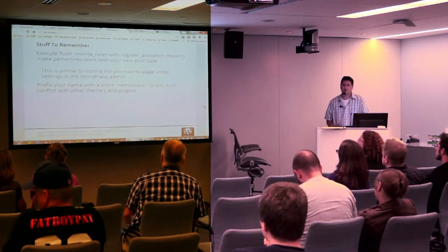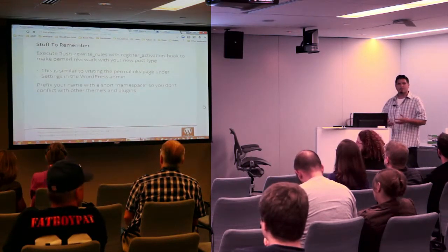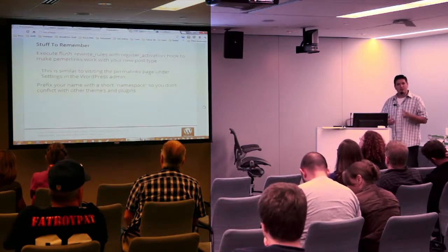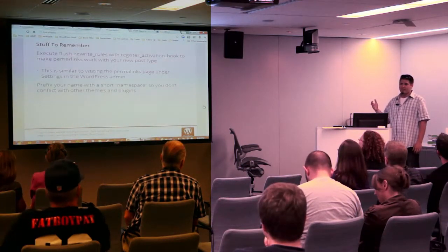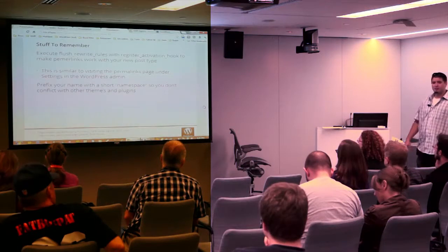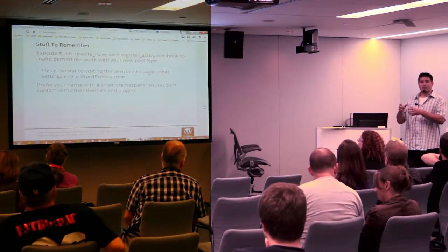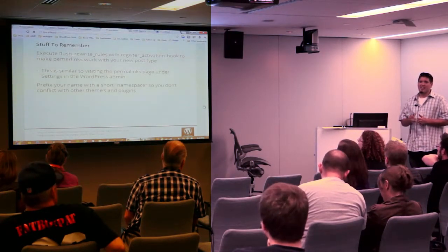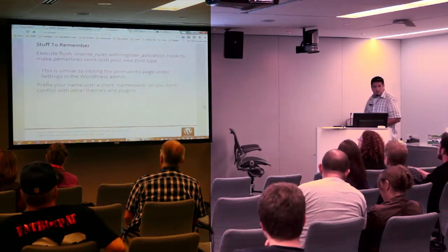Some things to remember: when using custom post types, specifically when programming them yourself — if you're using a plugin to create them this isn't a problem — WordPress needs to refresh its rewrite rules. The first time you create your custom post type using code and try to access your post directly, it might give you a 404. The easiest way to fix that is to go to your permalinks page, which automatically runs the flush_rewrite_rules code. Or you can add it yourself on plugin activation using the activation hook.